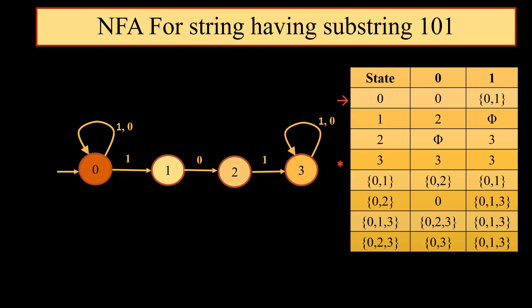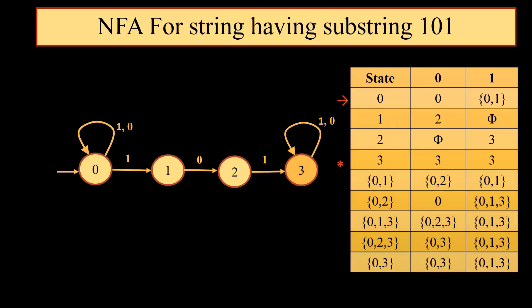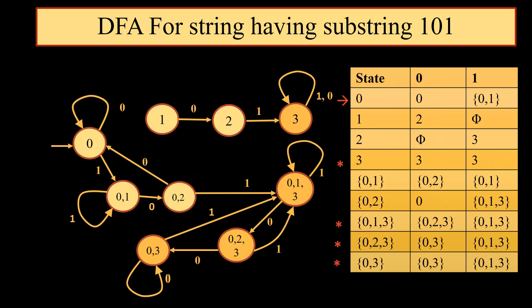{0, 2, 3} on 0 gives {0, 3}, and {0, 2, 3} on 1 gives {0, 1, 3}. {0, 3} is the next new state added to the table. {0, 3} on 0 gives us {0, 3} and {0, 3} on 1 gives us {0, 1, 3}. We can see both these states, {0, 3} and {0, 1, 3}, are already part of the table, so we don't have any new state. So ultimately we get our final DFA.